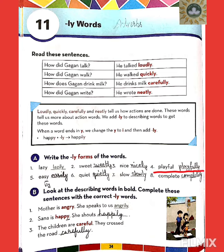Number 4: playful. You add L-Y, so there will be a double L — playfully: P-L-A-Y-F-U-L-L-Y. For easy: E-A-S-Y, we replace Y with I-L-Y, so easily: E-A-S-I-L-Y.